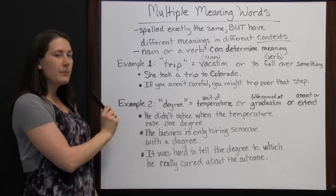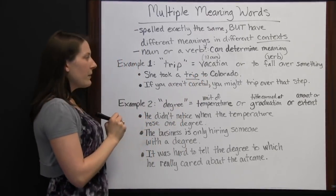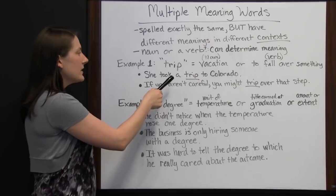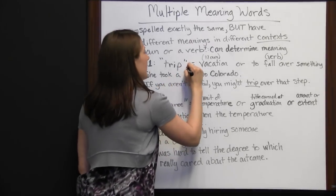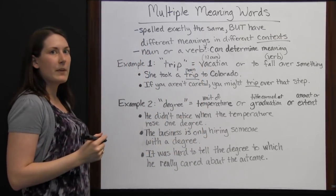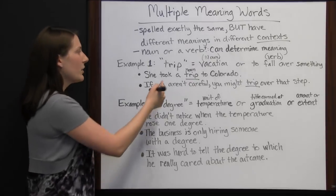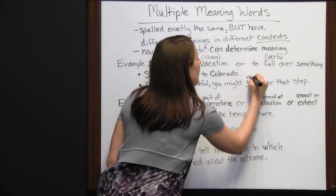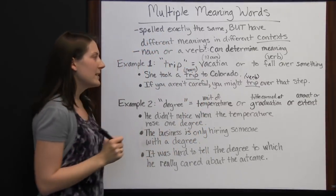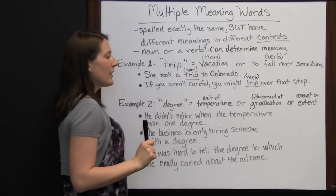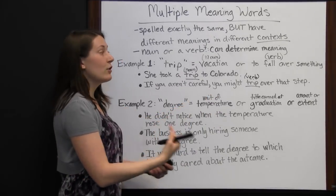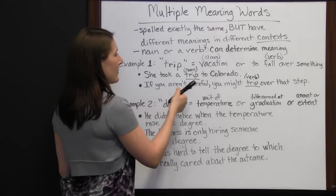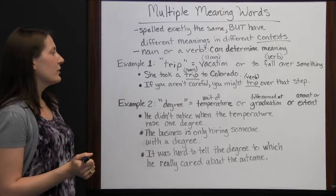Looking at the sentences: 'She took a trip to Colorado' — she's taking a vacation, so you know this is a noun meaning vacation. Alternatively, you could say a trip is a thing you might take, so it's a noun and has to mean vacation. 'If you aren't careful, you might trip over that step' — this is being used as a verb, meaning you might fall over that step. Alternatively, trip is something you're doing, so it has to be a verb in this sentence. Either way, finding out if it's a noun or a verb can help you figure out which version of the word is being used.